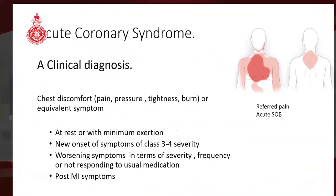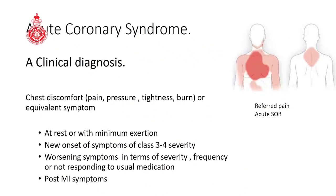Acute coronary syndrome is essentially a clinical diagnosis — a diagnosis made by history — with discomfort in the form of pain, pressure, tightness, burning, or equivalent symptoms forming the cornerstone of this syndrome. Referred pain is common because of how the autonomic nervous system supplies the heart.